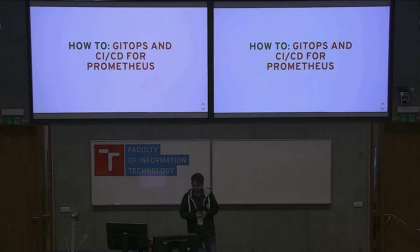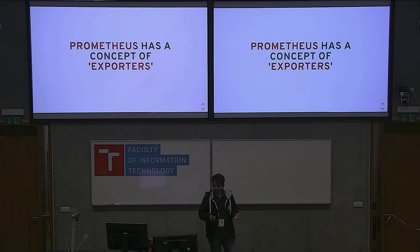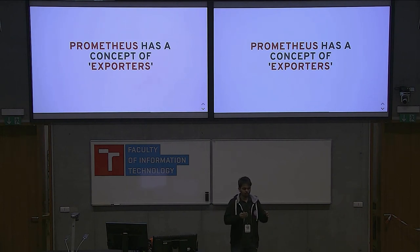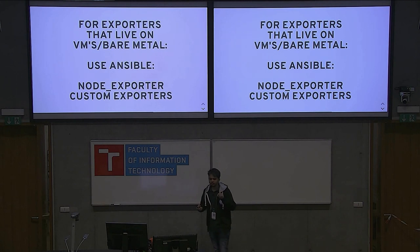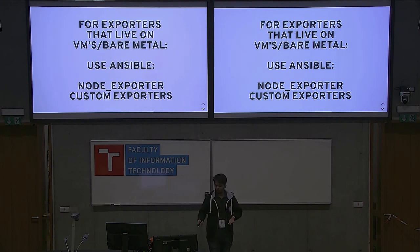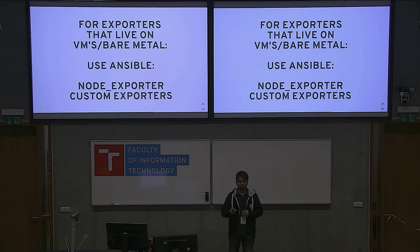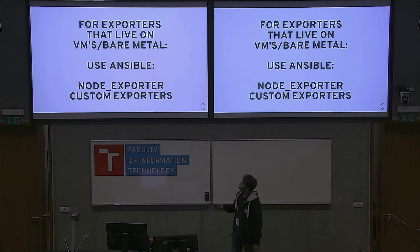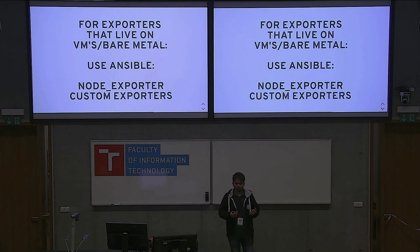Let's focus on CI and CD now. How to do GitOps and CI-CD for Prometheus? It's very easy. Prometheus has a concept of exporters — a program that exposes your metrics somewhere. For exporters that live on VMs or bare metals, you can use the node exporter, and you can also write custom exporters if you need more information. For deploying node exporters, use Ansible. You just put the node exporter config in an Ansible playbook or role, and then deploy it to your VMs.